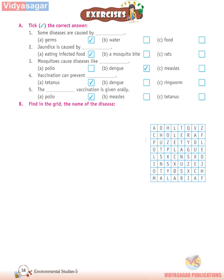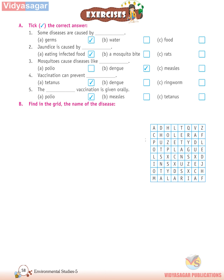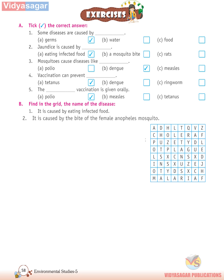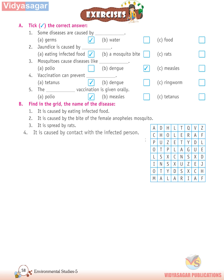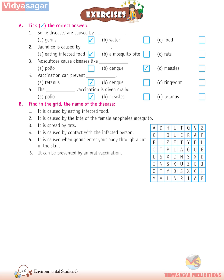B. Find in the grid the name of the disease. First, it is caused by eating infected food. Second, it is caused by the bite of the female Anopheles mosquito. Third, it is spread by rats. Fourth, it is caused by contact with an infected person. Fifth, it is caused when germs enter your body through a cut in the skin. Sixth, it can be prevented by an oral vaccination.